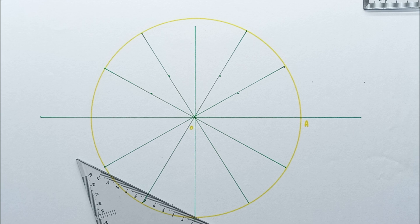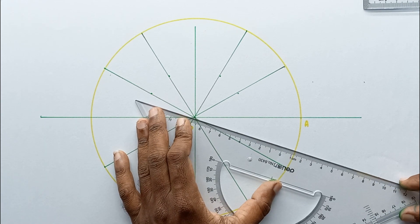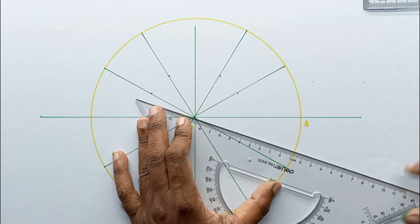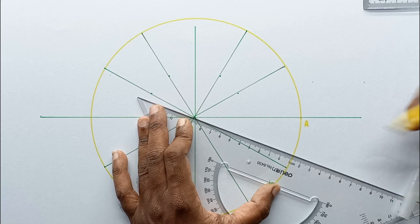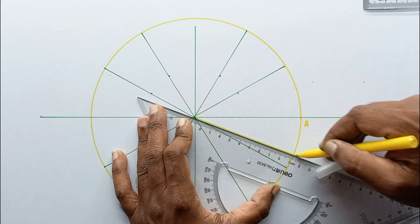So let's divide this line into 12 equal segments. First of all you should draw an incline line. You all know how to divide a line into an equal number of segments like this.